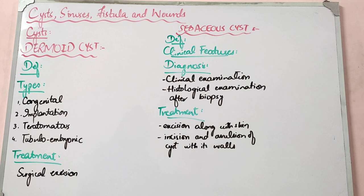Assalamualaikum warahmatullahi wabarakatuh. We will start the next chapter of general surgery which is cysts, sinuses, fistula and wounds. This chapter will cover important things. We will then try to complete hematology and rheumatology units within the next 5-10 days so that they will be covered quickly.